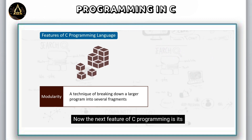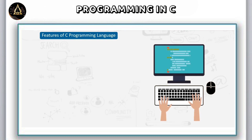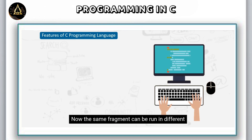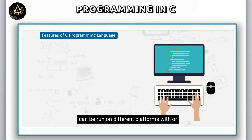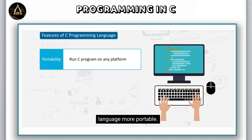The next feature of C programming is its portability. The same fragment can be run in different environments. C programs can be run on different platforms with or without modifications, which makes the language more portable.